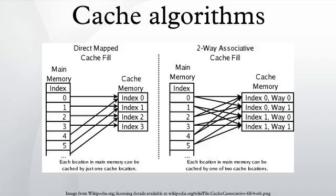The hit ratio of a cache describes how often a searched for item is actually found in the cache. More efficient replacement policies keep track of more usage information in order to improve the hit rate.